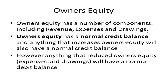Anything that increases owner's equity will also have a normal balance of a credit, so revenue will have a normal balance of a credit. However, anything that reduces owner's equity will have a normal balance of a debit. So expenses will have a normal balance of a debit, and drawings will have a normal balance of a debit.